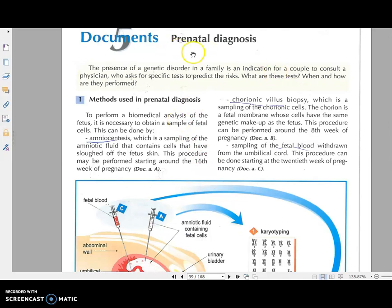Diagnosis means تشخيص, diagnosis before birth. So in document 5 we are going to study prenatal diagnosis. These are the techniques that allow us to diagnose if the baby or unborn baby or fetus has a chromosomal problem or genetic problem. For example, if a woman is pregnant and she has family history of a certain disease, for example thalassemia or whatever, she wants to know if her baby has this disease or not.